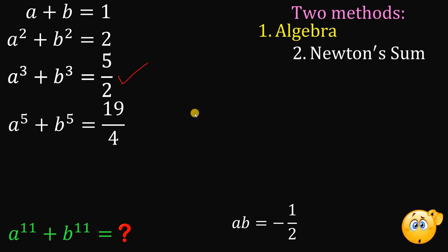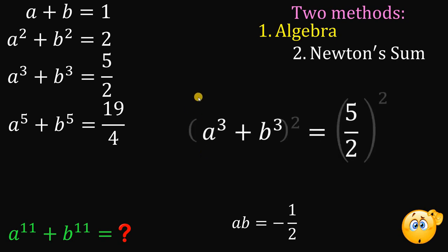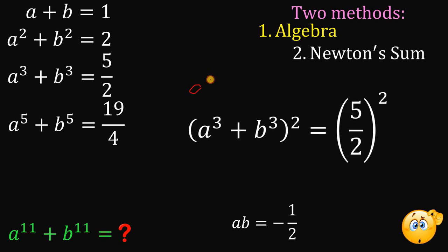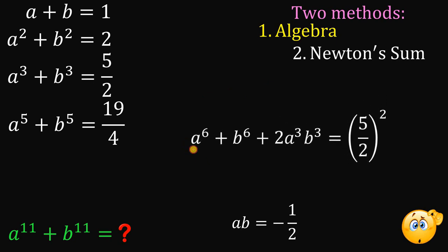Next, let's square the third equation — a cubed plus b cubed equals 5 over 2 — to get the value of a raised to the 6th power plus b raised to the 6th power. Expanding gives a to the 6th plus b to the 6th plus 2 times a cubed b cubed, equals 5 over 2 squared, which is 25 over 4.